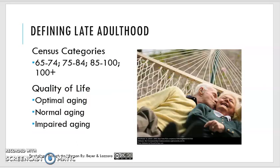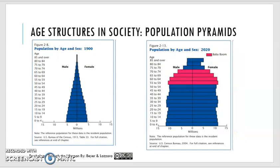When we define late adulthood, if we look at our census categories — we recently had a census this past year — you'll see a breakdown identified there. When we think about getting older and into late adulthood, we want to think about how we are aging optimally to live a really high-quality, satisfied life, thinking about the normal patterns of aging, and also cases where we are getting older but having greater impairments — that's the idea of impaired aging. The book discusses how our population distribution is changing as the baby boomers get older.